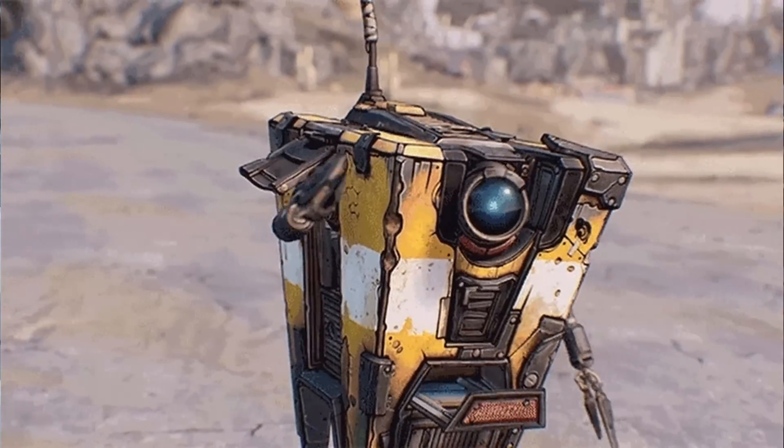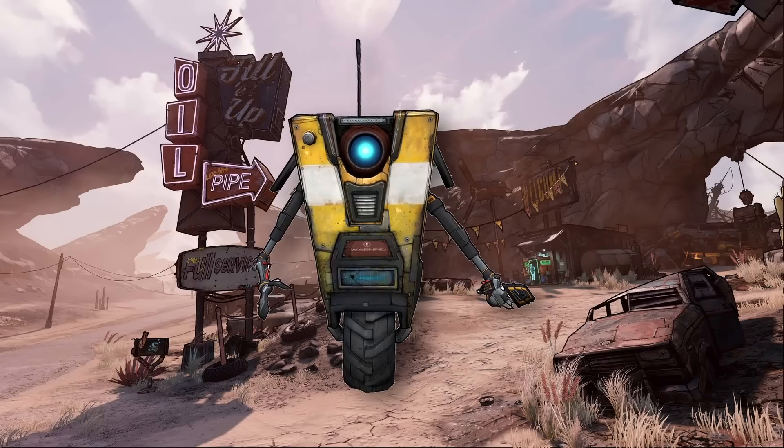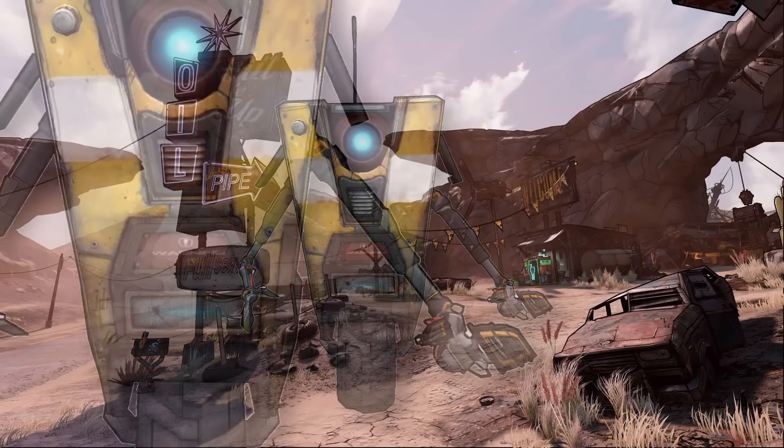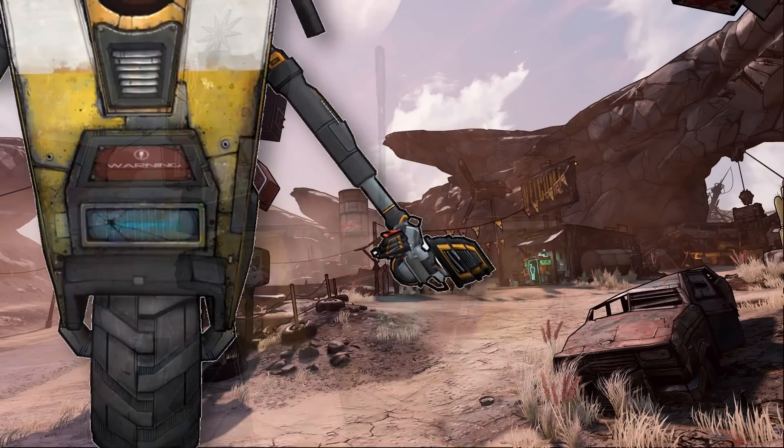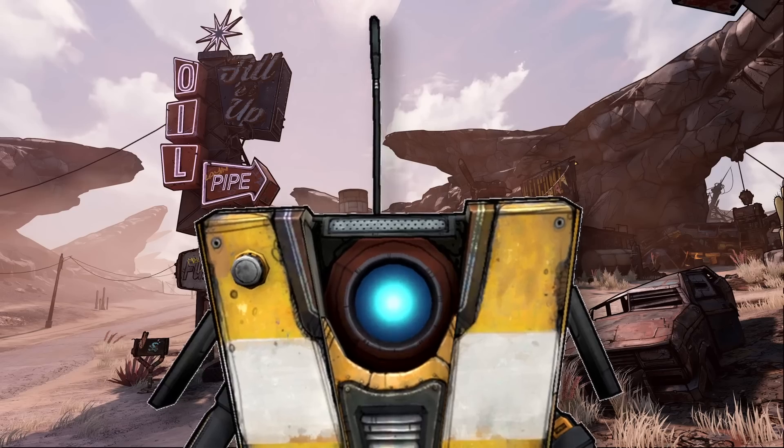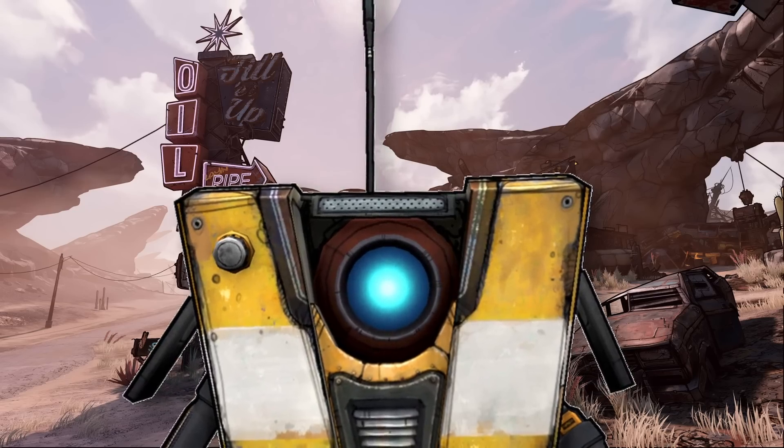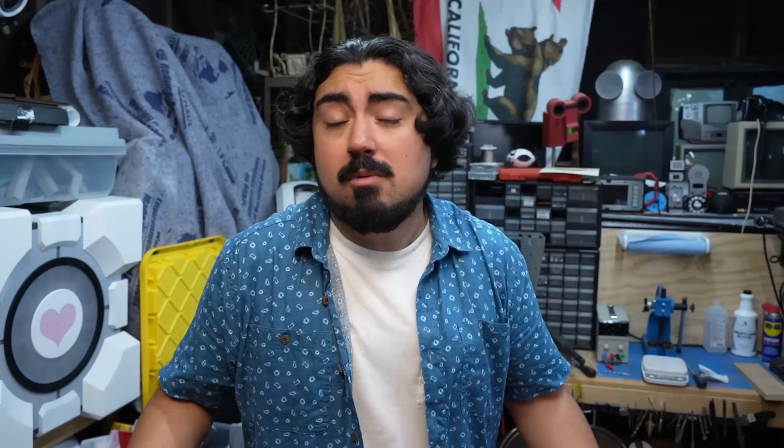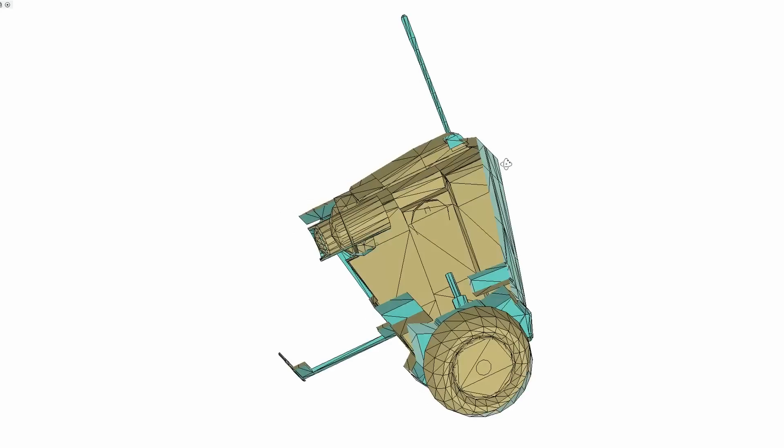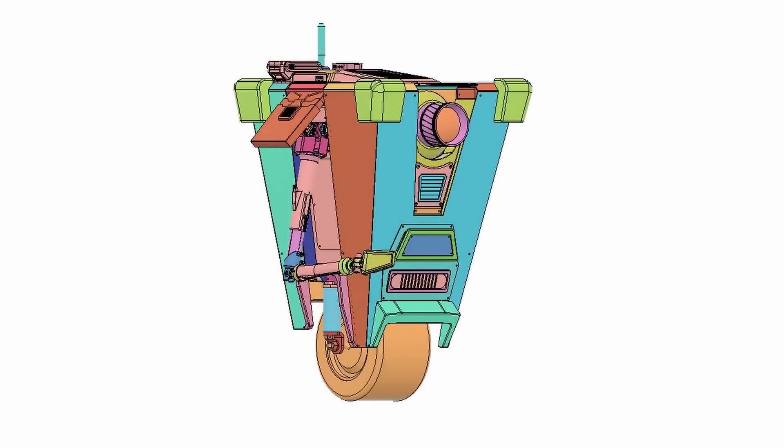I'm talking about this guy right here. And you might think that Claptrap is just a pathetic box on a wheel with spindly, fragile little arms and a sad, simple lens for an eye, incapable of expressing deep emotion. And you'd be right. But behind all of that is a remarkably complex machine. Well, actually the game model is pretty simple, there's not a whole lot going on in there. But in my design,